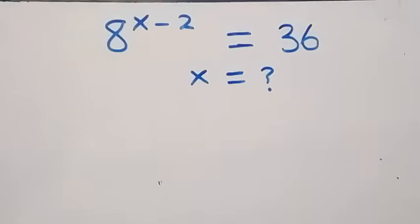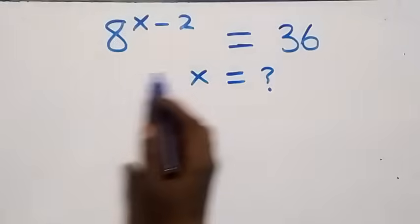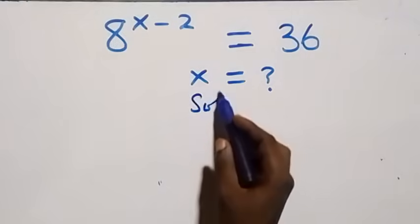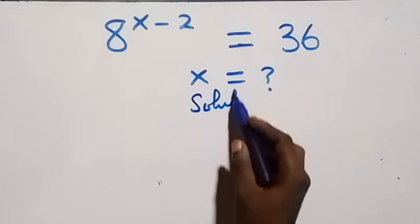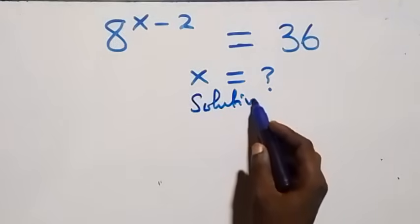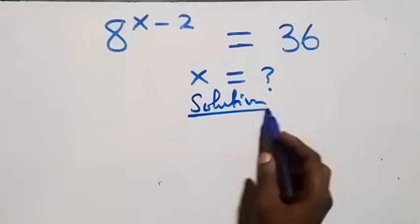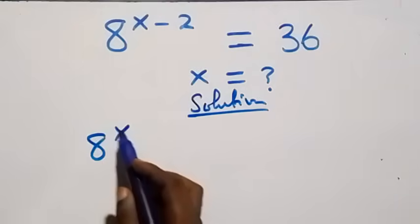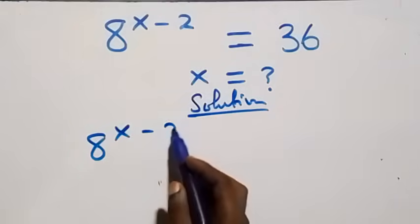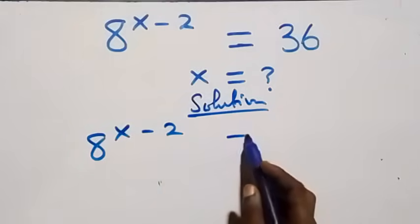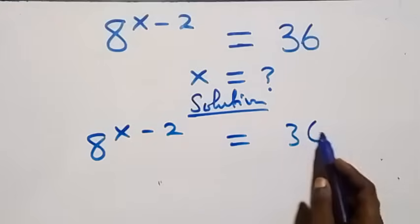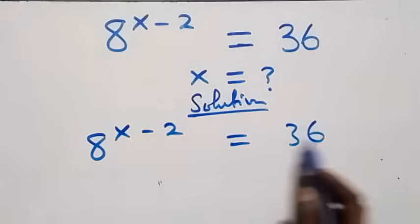Hello, you are welcome. How to solve this nice exponential equation. What we have here is 8 raised to power x minus 2 equals 36.